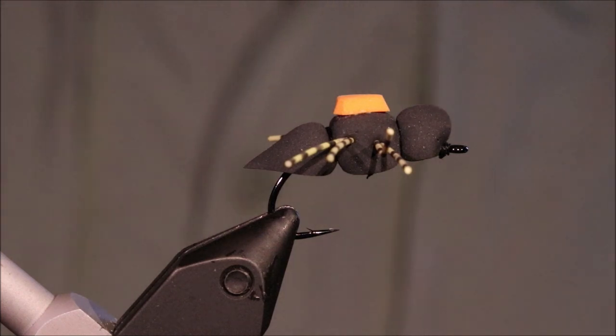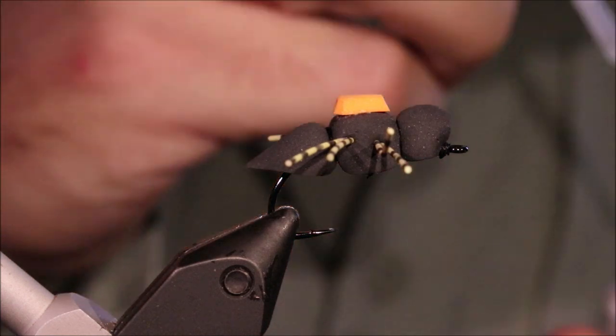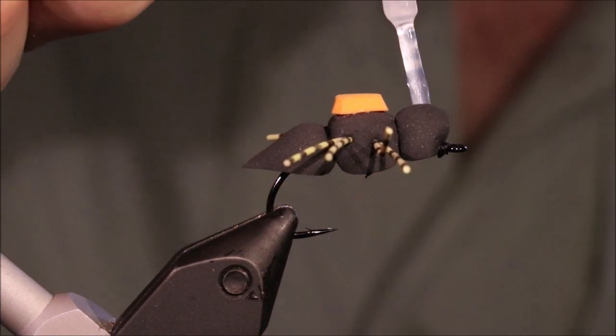Then the last thing is just these eyes. It's doll's eyes. These are 3mm I'm using. Smallest size. Yellow. And I'm not usually a big fan of doll's eyes. But they do add a wee bit of noise to the fly.